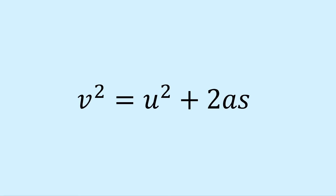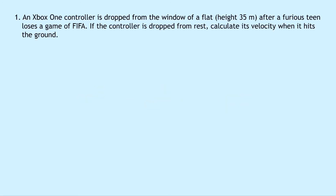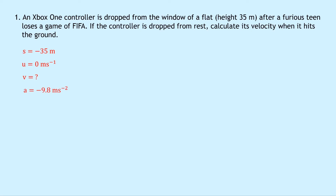Lastly, V squared equals U squared plus 2AS — we're going to do another four worked examples for this one. Question one says that an Xbox One controller is dropped from the window of a flat of height 35 meters after a furious teen loses a game of FIFA. If the controller is dropped from rest, calculate its velocity when it hits the ground. So doing SUVAT on the left hand side: S equals minus 35 meters. We're going to choose upwards to be positive and downwards to be negative. The controller drops 35 meters downwards, so it's a negative displacement — minus 35 meters for S. U equals 0 meters per second, V equals question mark, A equals minus 9.8 meters per second squared because acceleration due to gravity always acts downwards, and we don't know our time. So I'm going to put a star next to V.